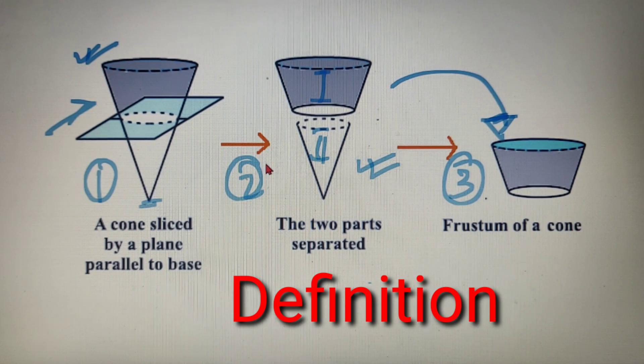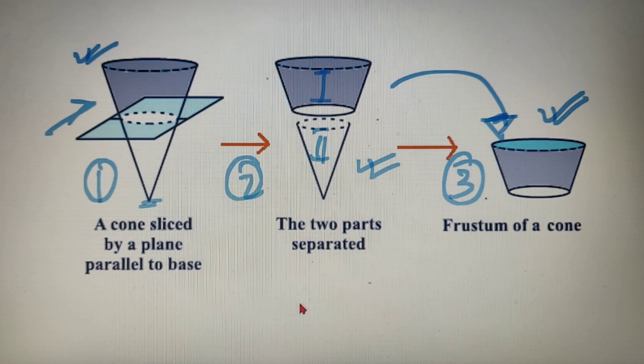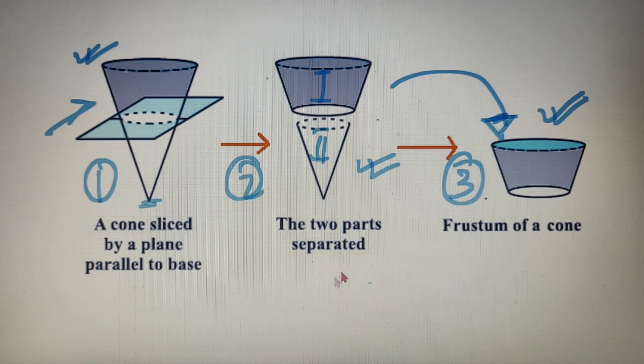If a right circular cone is cut off by a plane parallel to its base, then the portion of the cone between the cutting plane and the base of the cone is called as the frustum of the cone. So till now we have discussed the terminology, the formation and definition of a frustum.